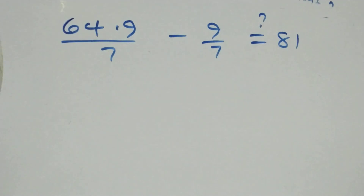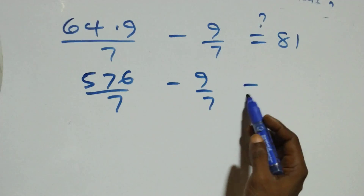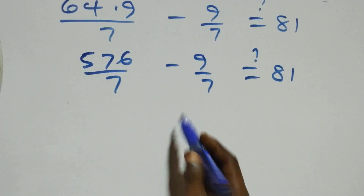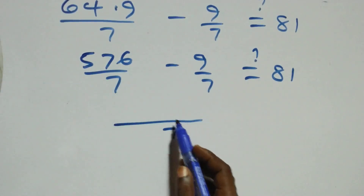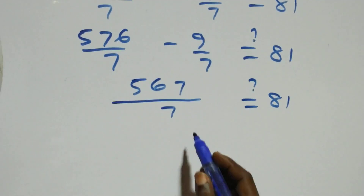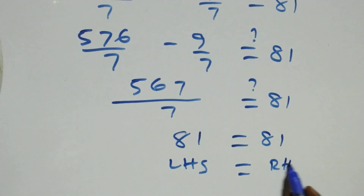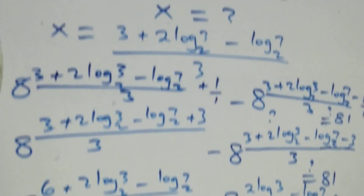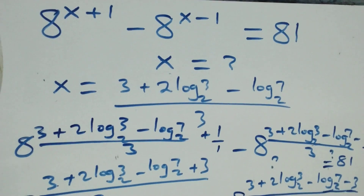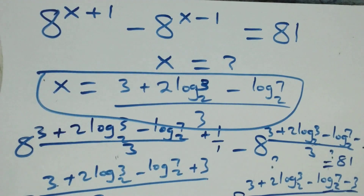Bringing together with common denominator 7: 64 times 9 is 576, so we have 576 over 7 minus 9 over 7, which gives 567 over 7. Dividing 567 by 7 gives 81, which equals 81 on the right-hand side. Left-hand side equals right-hand side, so we conclude that x equals 3 plus 2 log 3 base 2 minus log 7 base 2, all over 3, satisfies the given problem. Thank you for watching — subscribe for more videos, turn on the notification bell, and share this video. See you next class!